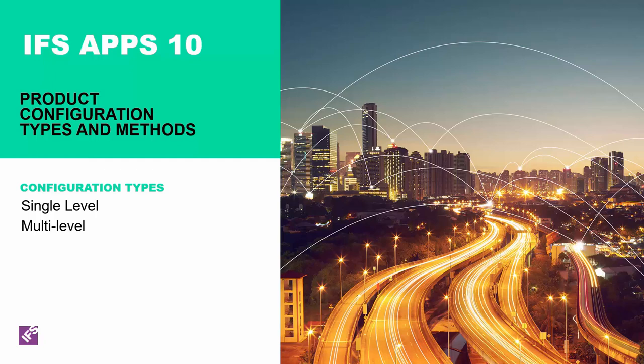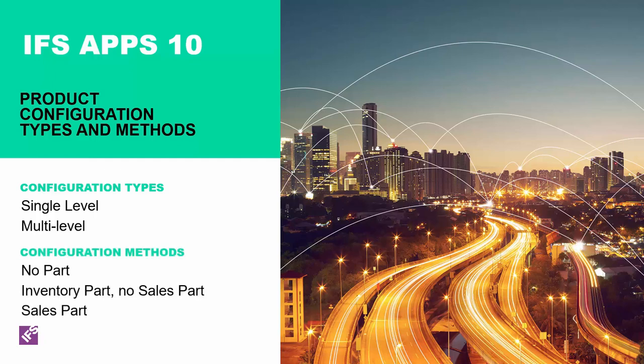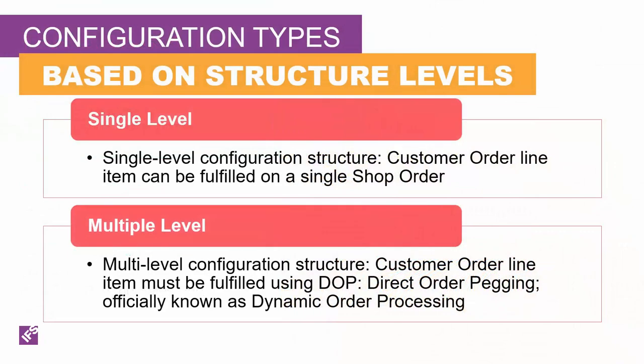Some products can be configured at a single level where all choices can be fulfilled by manufacturing or assembling components on a single shop order. Other, more complex products defined as multiple-level structures — requiring intermediate shop orders and purchase orders — are considered multi-level configurations handled as a network of shop orders and purchase orders. Officially known as dynamic order pegging, I redefine DOP as 'direct order pegging' because the network of orders needed to fulfill the customer order line is automatically and directly pegged to it.